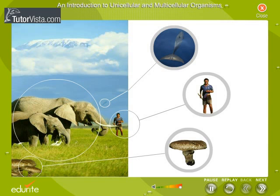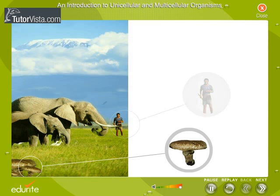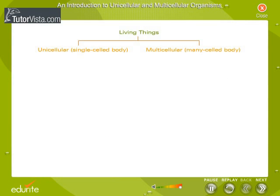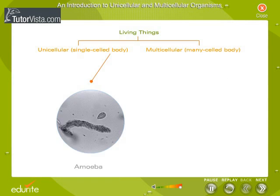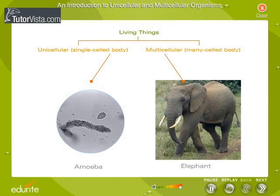It can be a single cell or a million cells. If the body of the organism is composed of a single cell, it is called a unicellular organism. When a large number of cells constitute the body, we call it a multicellular organism.